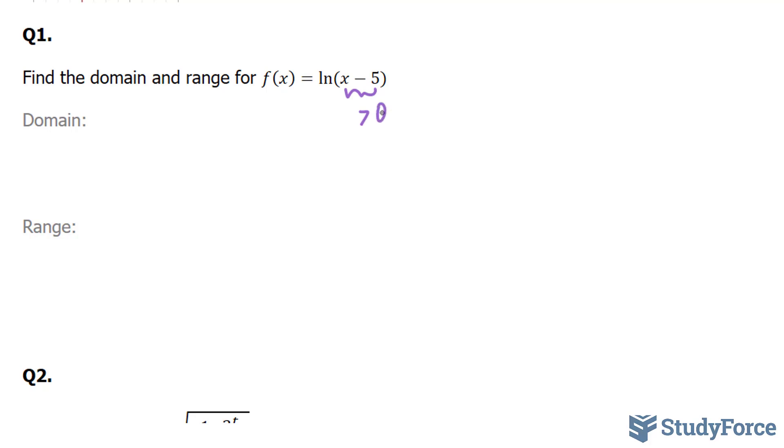If it's equal to 0, you'll get an error. So to find the domain, we have to find out where this part can't be 0. And to do that, we'll set x - 5 must be greater than 0.